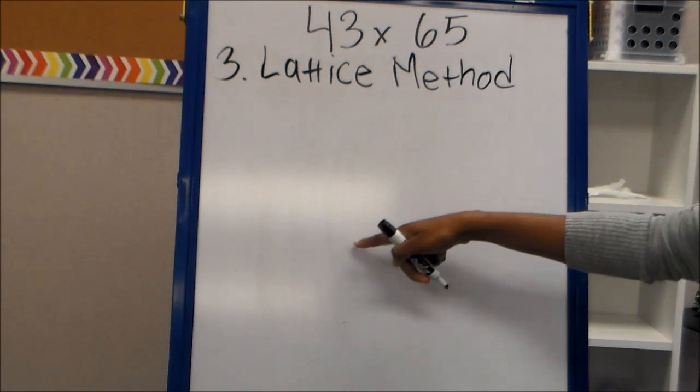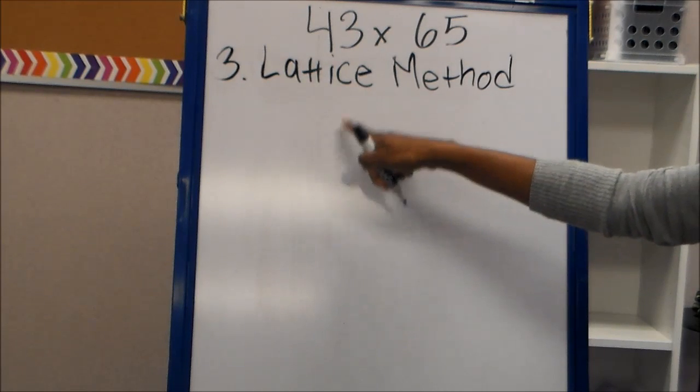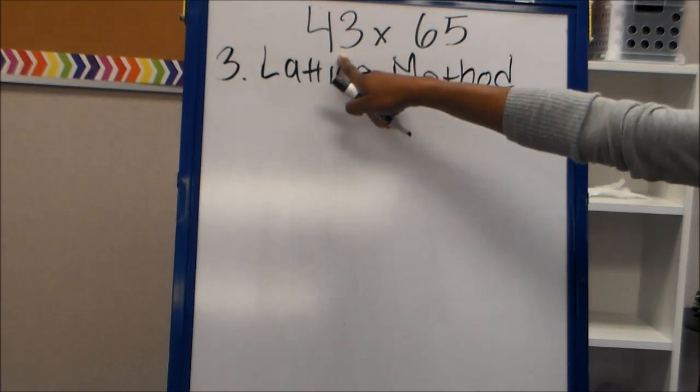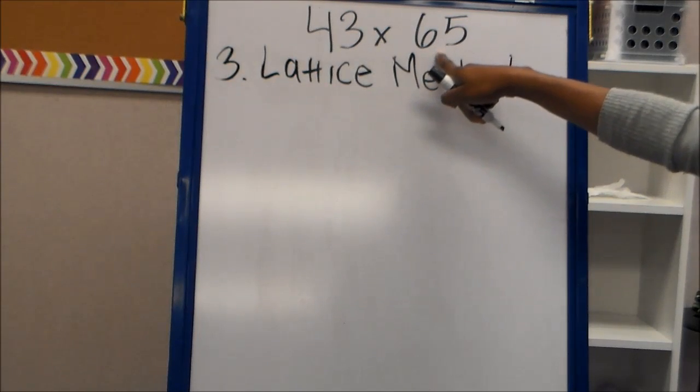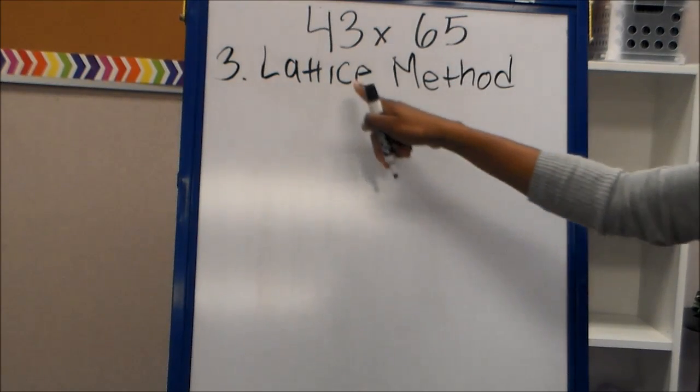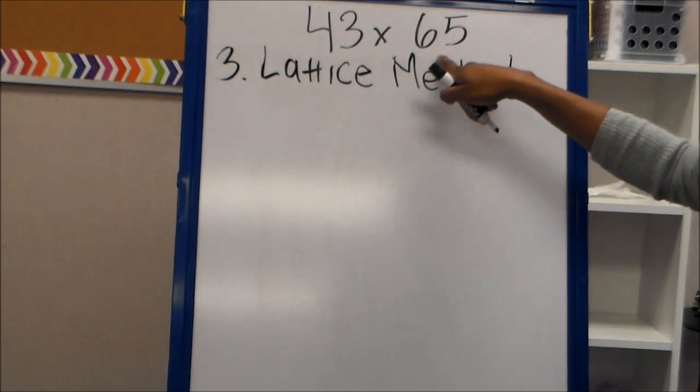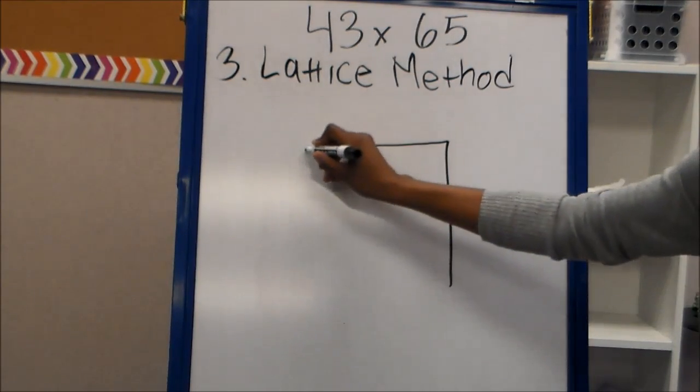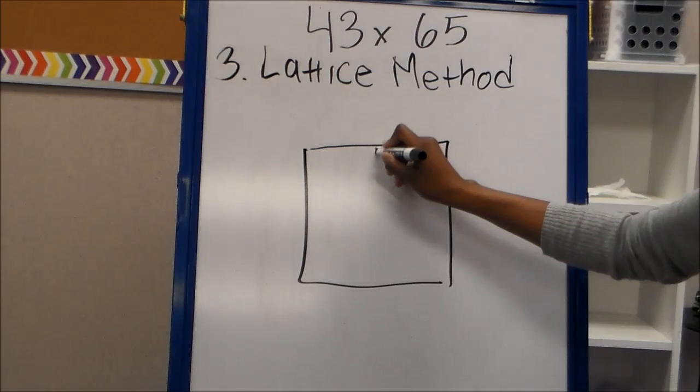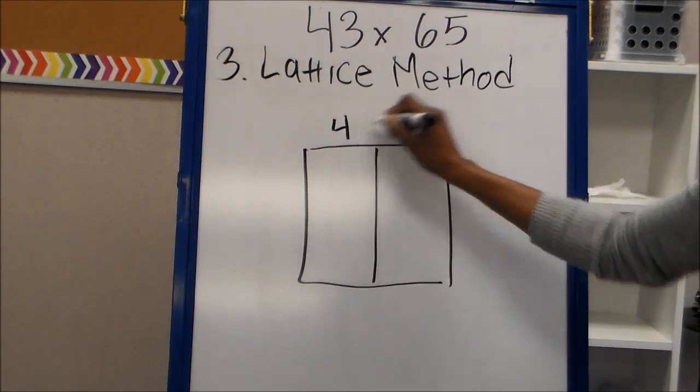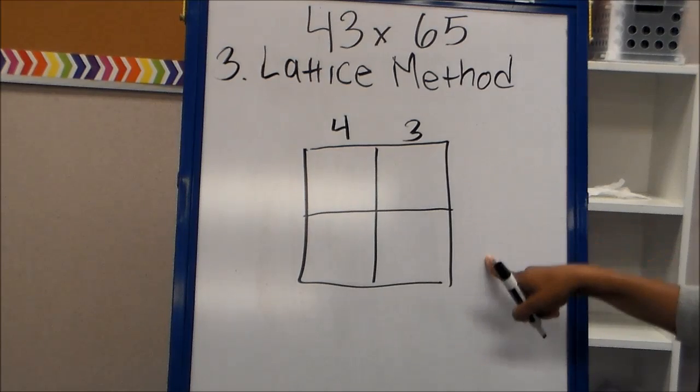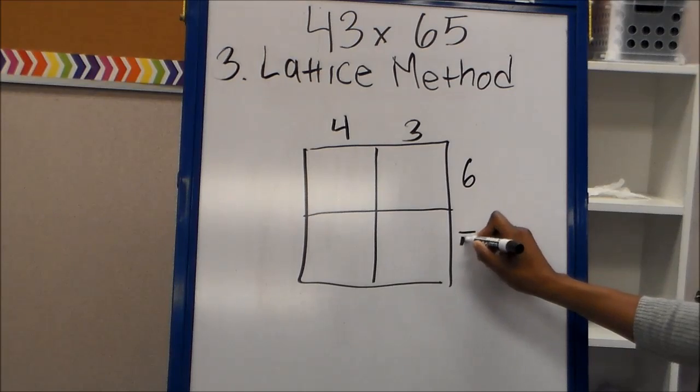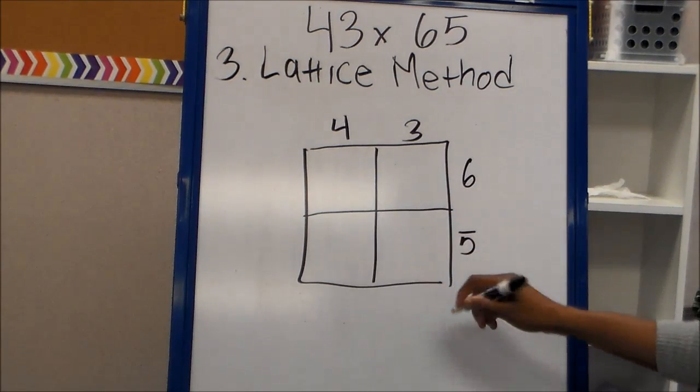We're going to draw an array again. And the number of digits in our first factor determines the columns. The number of digits in our second factor determines the rows. So we have two columns and two rows. So two columns, four and three, and two rows. I'm going to write it on this side because of the way the lattice method is set up. So six and five.